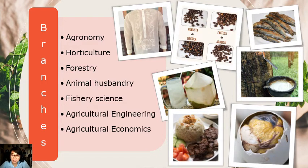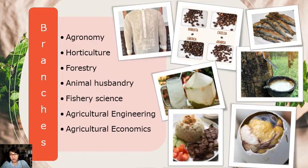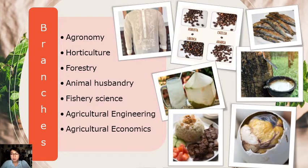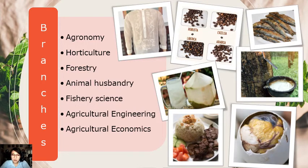Next is horticulture, which deals with the production of fruits, vegetables, flowers, ornamental plants, spices, condiments, and beverages. During the pandemic, horticulture gained a lot of interest — people in quarantine started growing plants using spare bottles and soil from nurseries. This gave rise to the 'plantito' and 'plantita' trend. Next is forestry, which deals with large-scale cultivation of perennial trees for supplying wood, timber, rubber, and other raw materials.